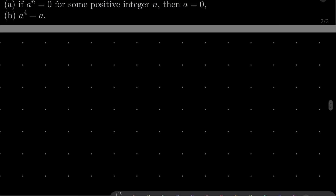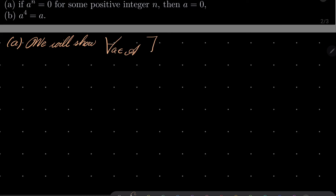For part A, we will show that for every element of our ring, and for every N greater than or equal to 2, if A to the power of N is 0, then A to the power of N minus 1 is also 0. How can we prove it?